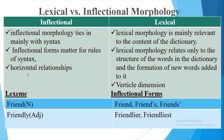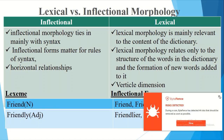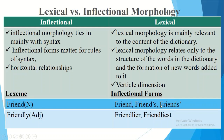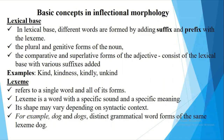A third difference is that inflectional morphology is a horizontal relationship, while lexical morphology is a vertical relationship. For example, the lexeme 'friend' (a noun) has inflectional forms: 'friend', 'friends', and 'friend's'. The word 'friendly' (an adjective) has inflectional forms 'friendlier' and 'friendliest'. After going through these differences, we will now deal with basic concepts in inflectional morphology.